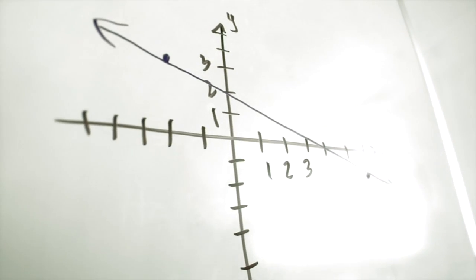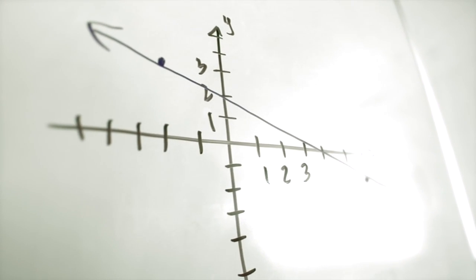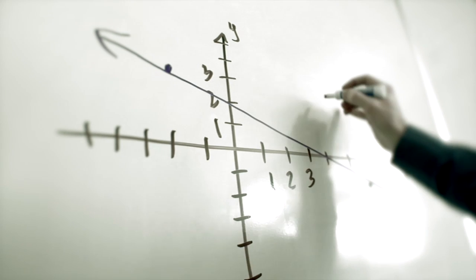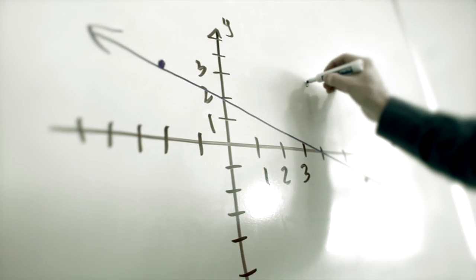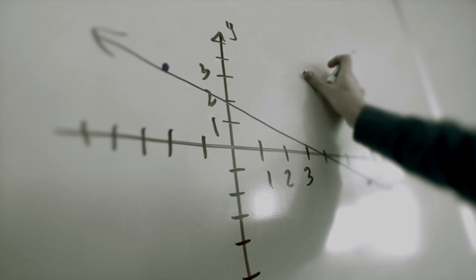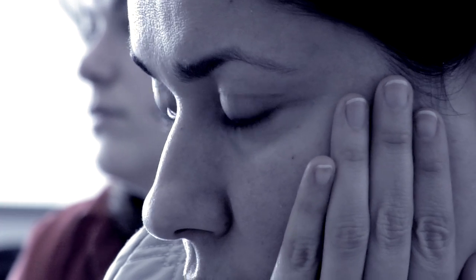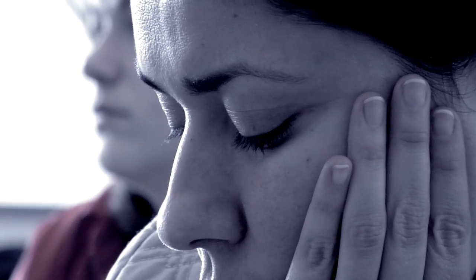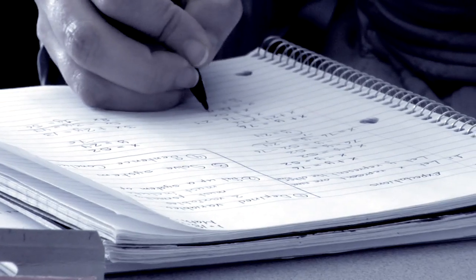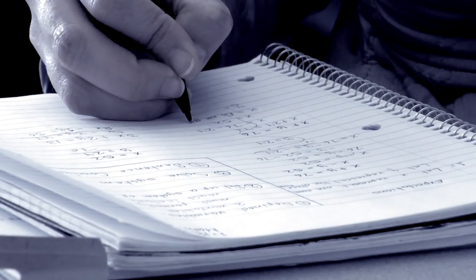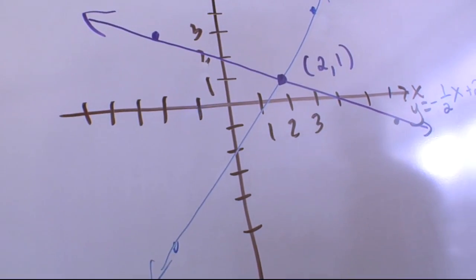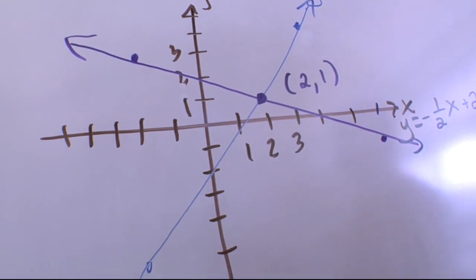For most students, math tends to be their most challenging subject. Now imagine you're trying to learn this without being able to see what's on the board or read what's in the book. Imagine you can't visually see the slope of the line. You can't see the shape of a trapezoid or a triangle. How would you grasp those concepts? What other resources would you need to comprehend those ideas?